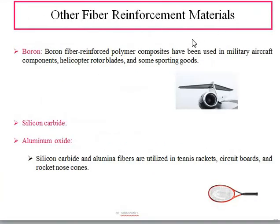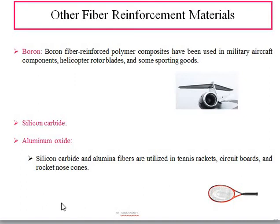Some other fiber reinforcement materials widely used are boron, silicon carbide, and aluminum oxide. Boron fibers are widely used for military aircraft components, helicopter rotor blades, and sports goods requiring high wear resistance and high temperature performance. Silicon carbide and aluminum oxide are widely used for tennis rackets, circuit boards, and rockets where high air resistance and extreme operations are required.